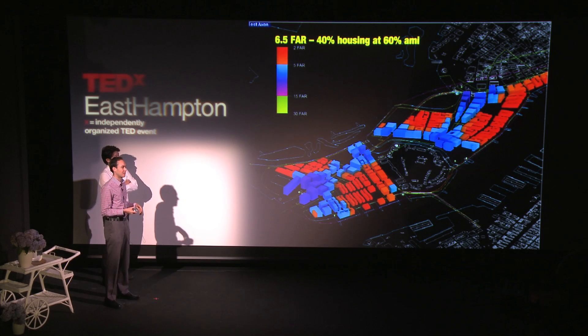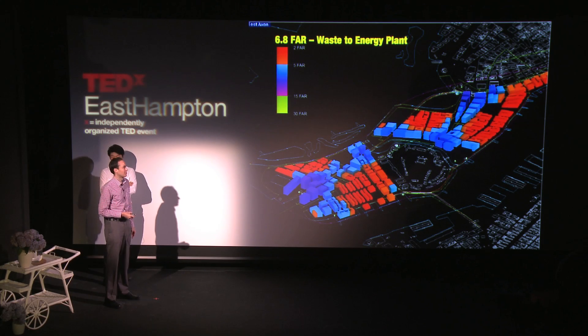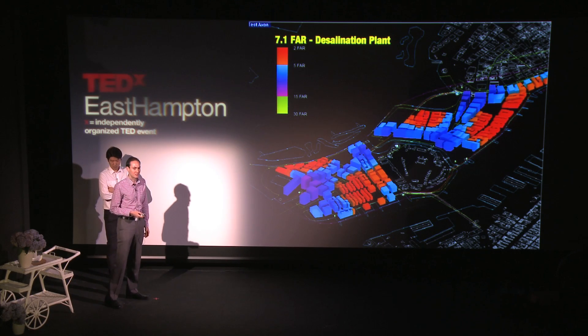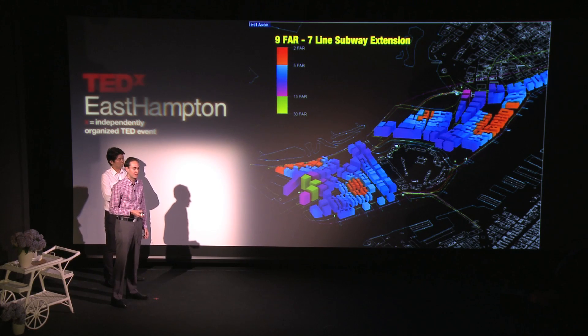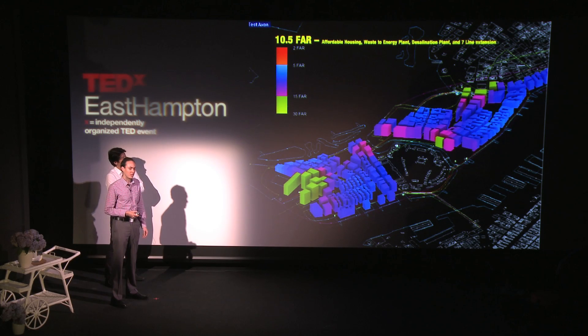From here, we can speculate on multiple alternate futures: increasing the density to see what kind of public infrastructure LoLo could generate revenue to pay for, benefiting not just LoLo but the city as a whole. At 6.5 FAR — roughly the density of the Village — we get 40% of the housing to be tremendously affordable. At 6.8 FAR we could build the waste energy plant. At 7.1 FAR we could build a desalination plant to start providing clean water for the region. At 9 FAR we could pay for the 7 line extension to Secaucus, New Jersey. At 10.5 FAR we could pay for all of those combined. For context, Lower Manhattan averages about 17 FAR, Midtown about 22 FAR, and the Empire State Building is 33.5 FAR.